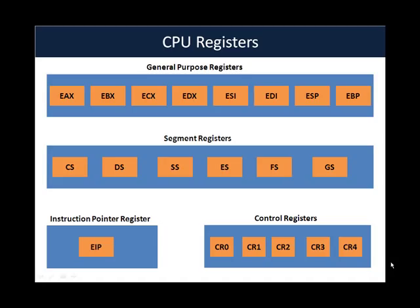Very broadly there are four kinds of CPU registers. The first is the general purpose CPU registers. There are approximately eight general purpose CPU registers: EAX, EBX, ECX, EDX, ESI, EDI, ESP, and EBP. These are generally used during various calculations which happen inside the CPU. We will dive into more detail about these registers in the next slide.